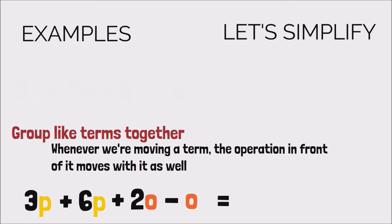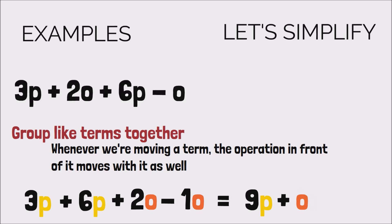And now we can simplify. 3P plus 6P, based on our earlier examples, would be equal to 9P. And 2O minus O, which is the same as 1O, would equal to 1O or just O. And so now we're left with 9P plus O. We now have an expression with two unlike terms, that means that it cannot be further simplified, and so it's in its simplest form possible.